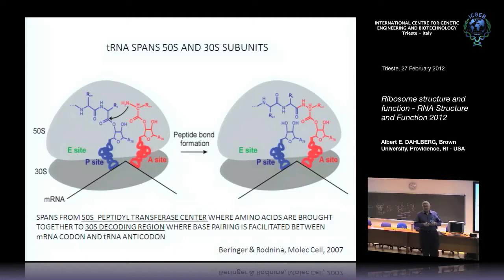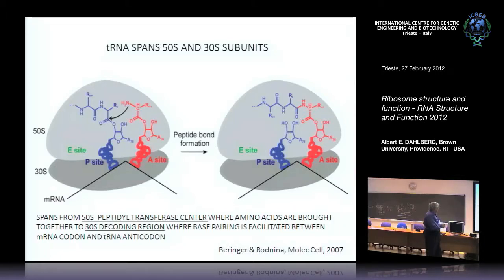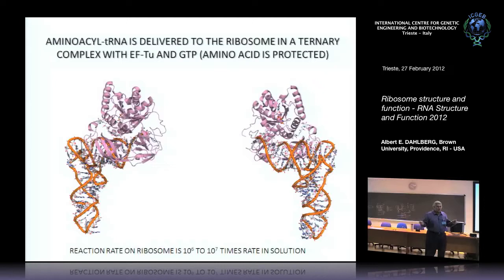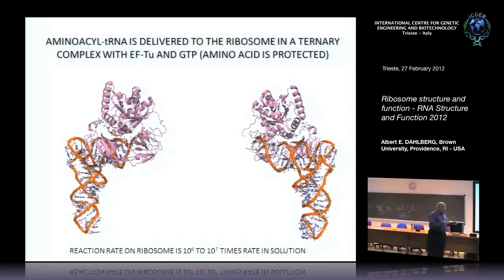These tRNAs actually span the two subunits. The aminoacyl end of the tRNA goes into the 50S subunit, while decoding with the anticodon on the messenger RNA occurs on the 30S subunit. When an amino acid comes to the ribosome attached to a tRNA, this reaction occurs at an incredibly rapid rate. Since there are 20 different amino acids, the cell can only determine which to use by complementary sequences of the anticodon.